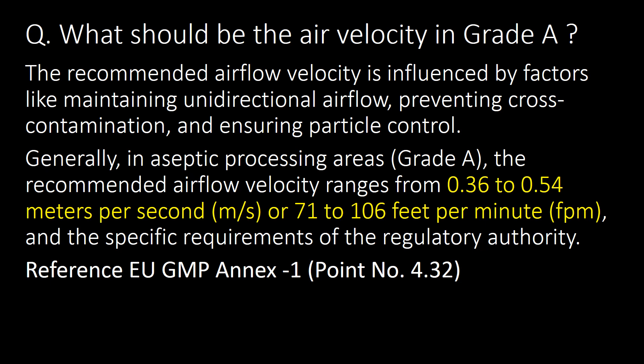What should be the air velocity in Grade A? The recommended airflow velocity is influenced by factors like maintaining unidirectional airflow, preventing cross-contamination and ensuring particle control. Generally in aseptic processing areas, i.e. Grade A, the recommended airflow velocity ranges from 0.36 to 0.54 meters per second or 71 to 106 feet per minute, as per the specific requirements of the regulatory authority. Reference: EU GMP Annex 1, Point No. 4.32.